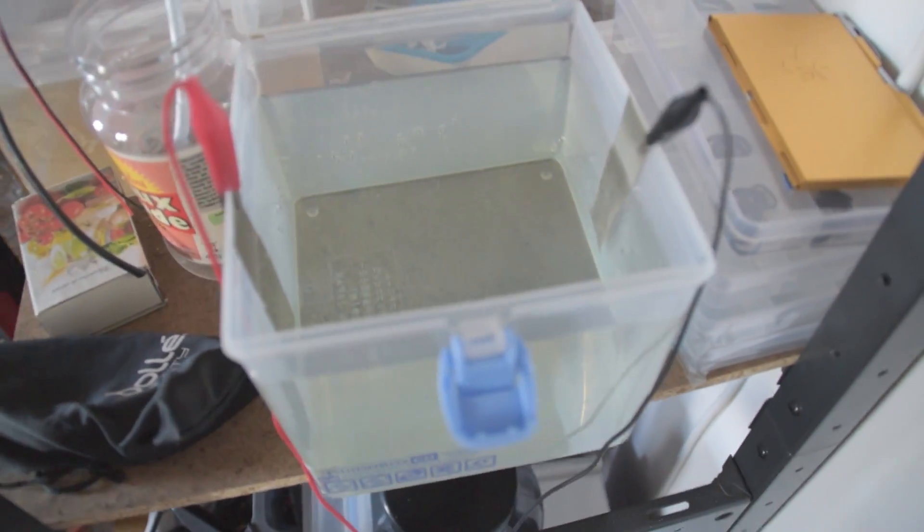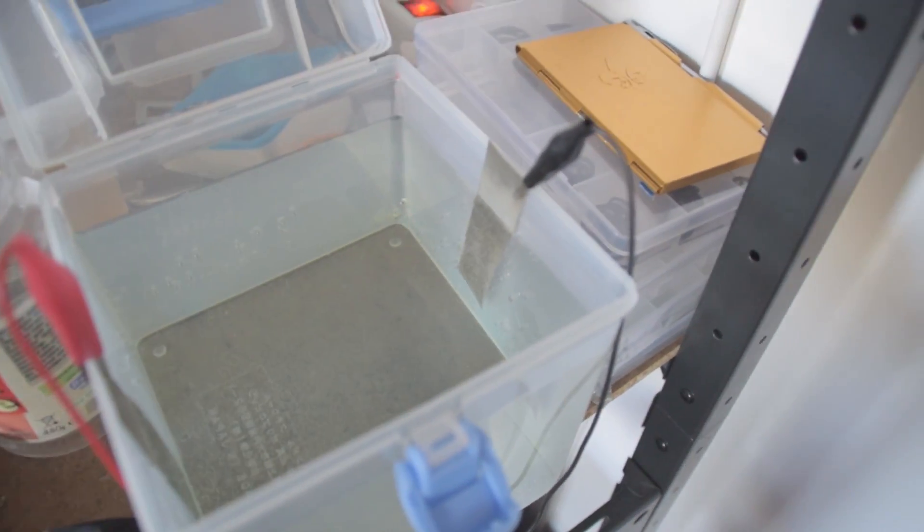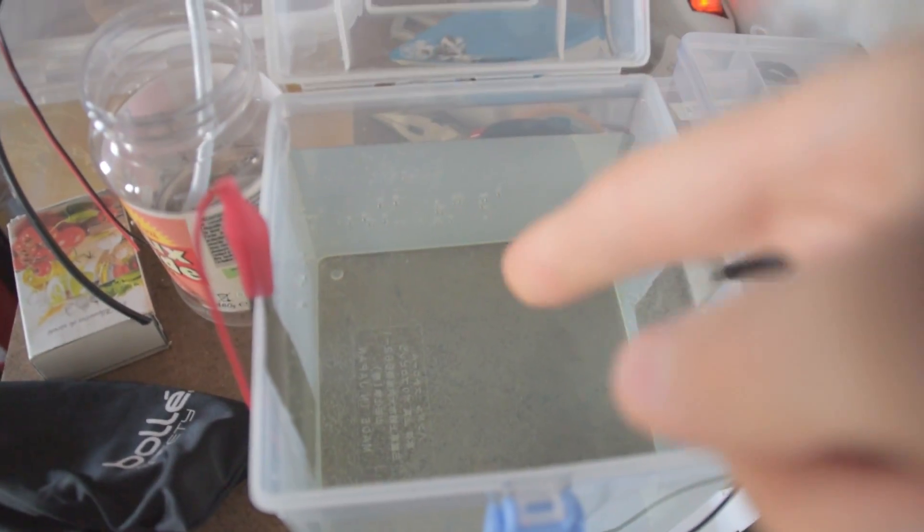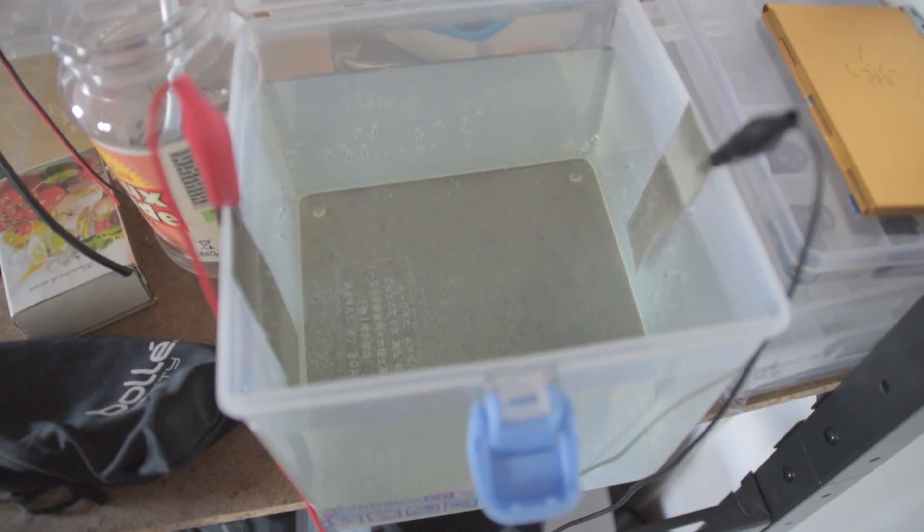The solution of nickel acetate is made with vinegar. This is just plain old vinegar with about a tablespoon of salt in it, and then you want to hook up some nickel electrodes.